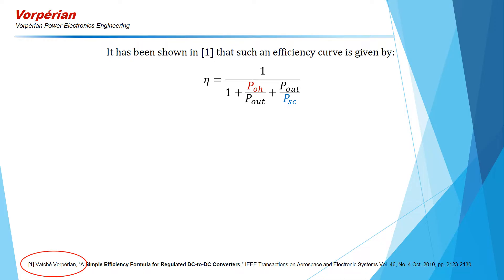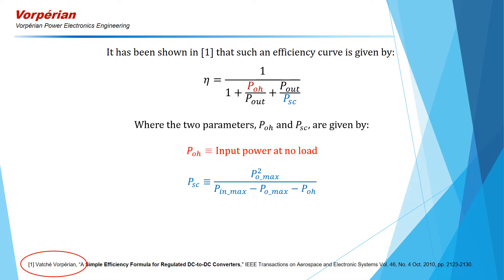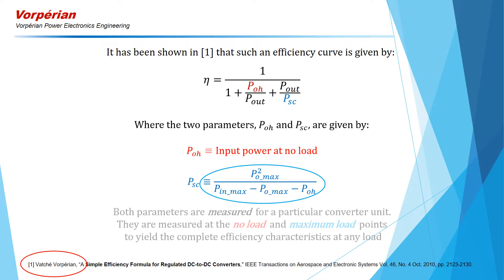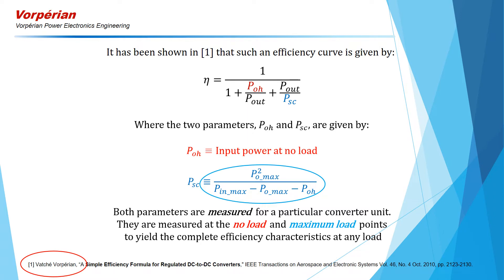In this equation, POH and PSC are two parameters defined as follows. POH is the measured input power at no load, and PSC is related to the measured maximum power by this equation. It is important to emphasize that both of these parameters are measured on a converter unit and not computed from first principles for a particular converter design. They are measured at two points: the maximum load point and the no load point. Once these parameters are inserted in the efficiency formula, the efficiency at any load can be obtained, as we shall see in the next example.